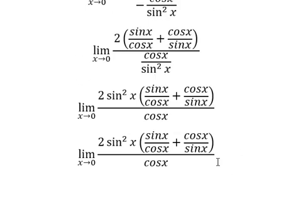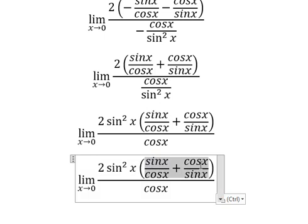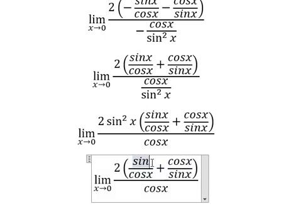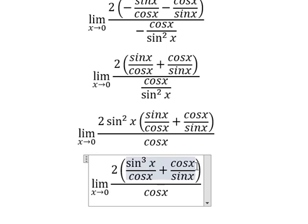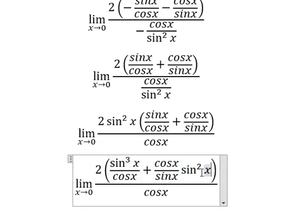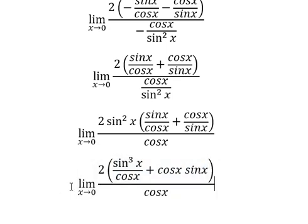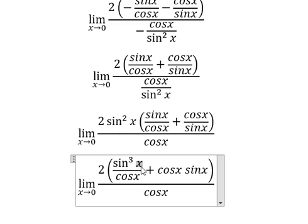So sine x times multiply by this one. So when x approaches zero, we put zero in here and here, you got zero.